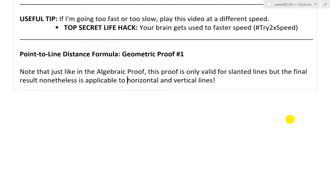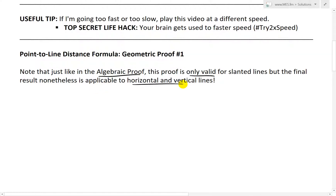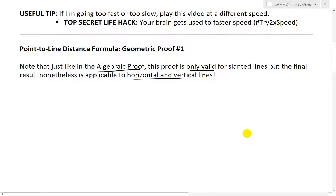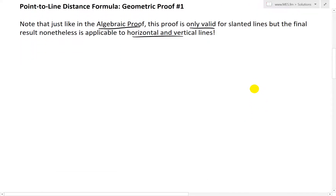Note that just like in the algebraic proof, which was in my earlier video — you can see that in the description below — this proof that I'm going to go over is only valid for slanted lines, but the final result nonetheless is applicable to horizontal and vertical lines, exactly as I showed in my algebraic proof. So make sure to watch that video; it's a good prerequisite for this one.